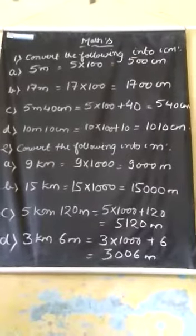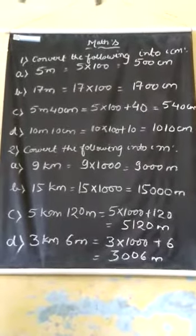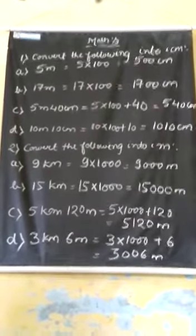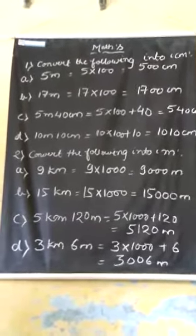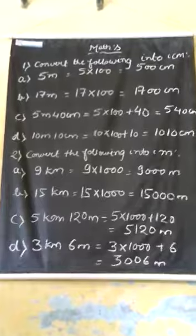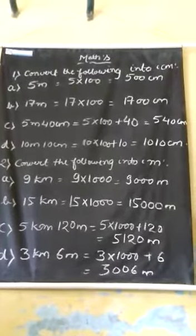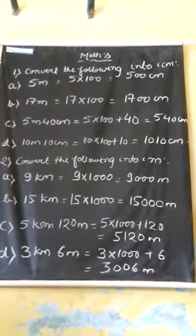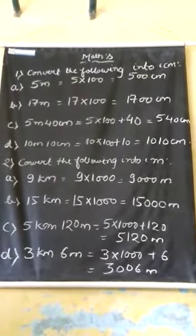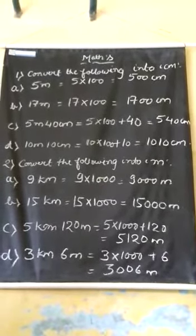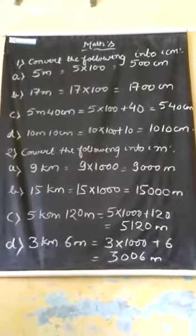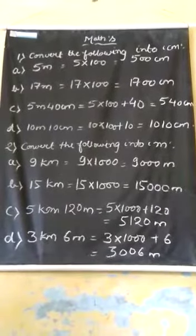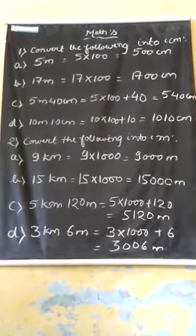Question number C: 5 meters 40 centimeters. We change 5 meters into centimeters, so we multiply by 100, it will be 500. Then we add 40, so it will be 540 centimeters.